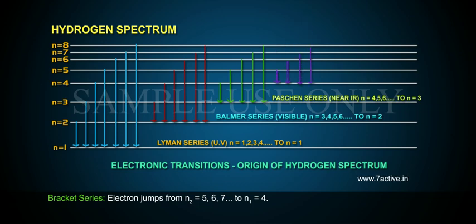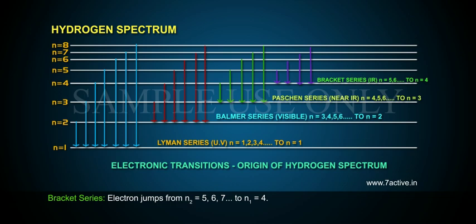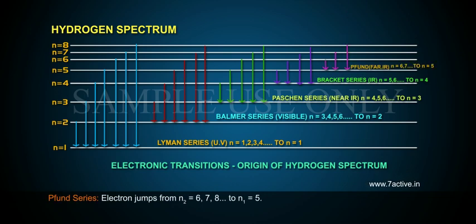Brackett Series: Electron jumps from N2 equal to 5, 6, 7, with N1 equal to 4. Pfund Series: Electron jumps from N2 equal to 6, 7, 8, with N1 equal to 5.